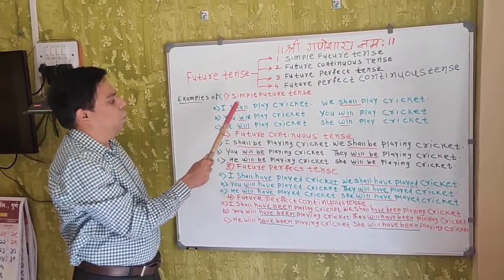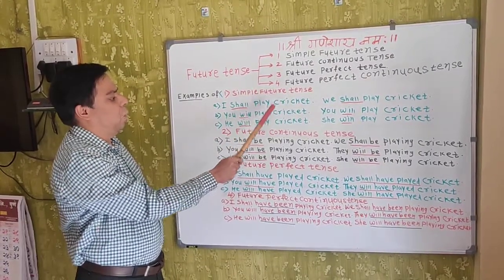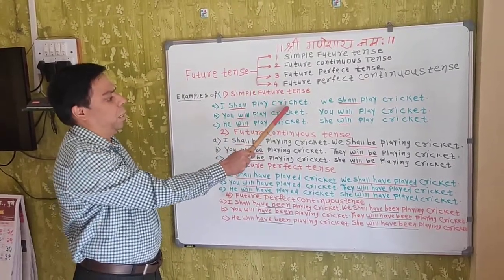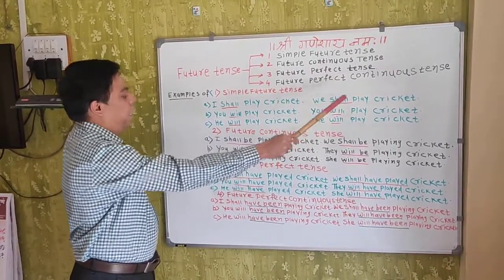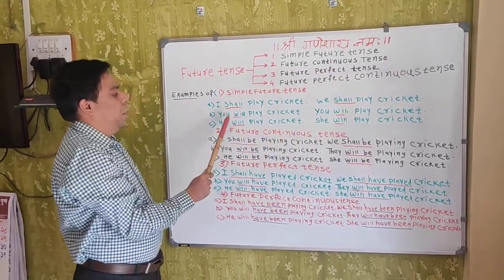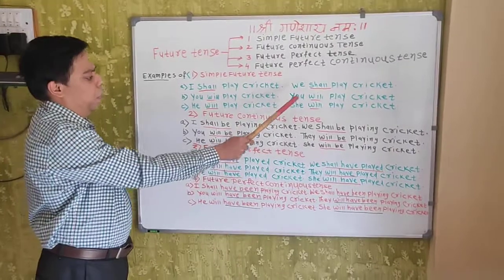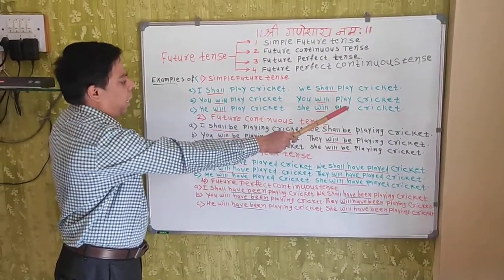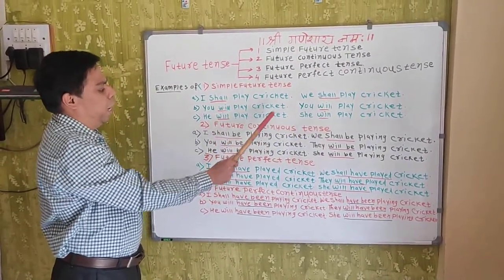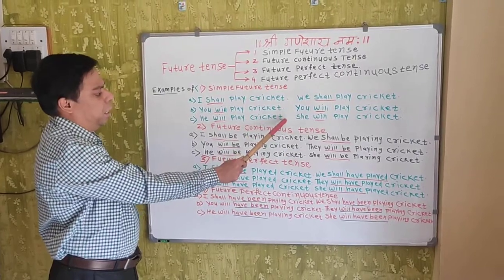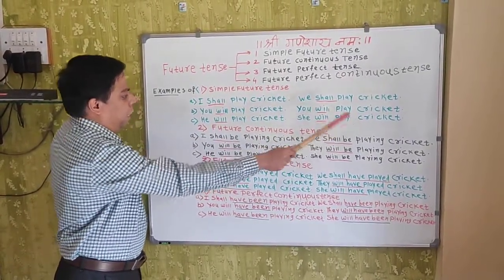Example of simple future tense. I shall play cricket. We shall play cricket. You will play cricket. He will play cricket. She will play cricket.